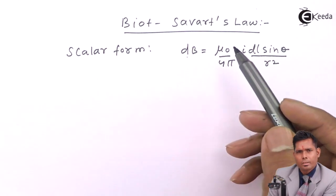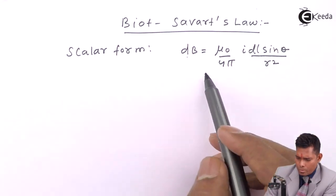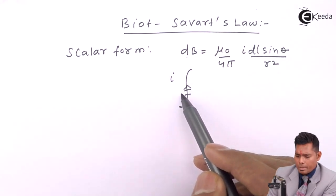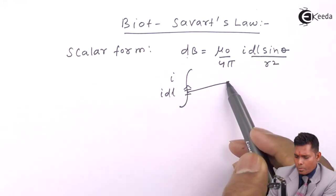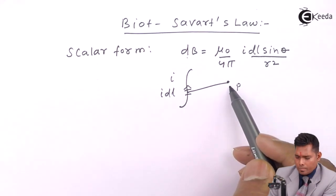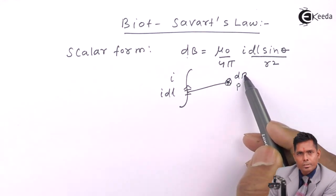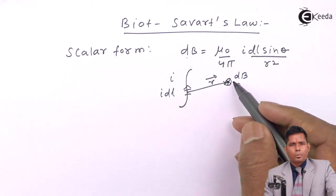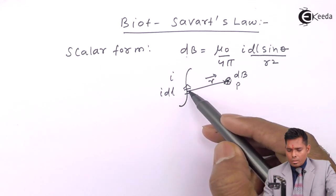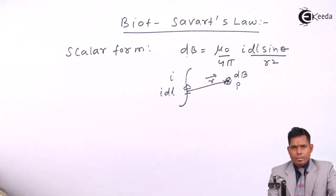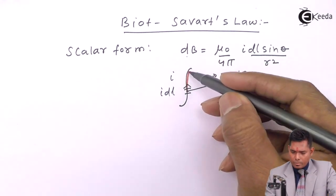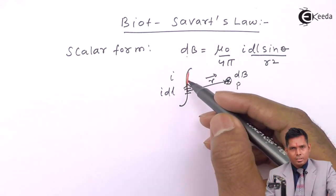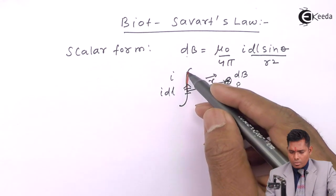It is valid for any type of conductor. If this is the current element dl from the center to a point P, the magnetic field here is dB. This is the position vector of the point from the element. This element makes an angle of theta. Along this line, the length itself is a vector, so dl is a vector.